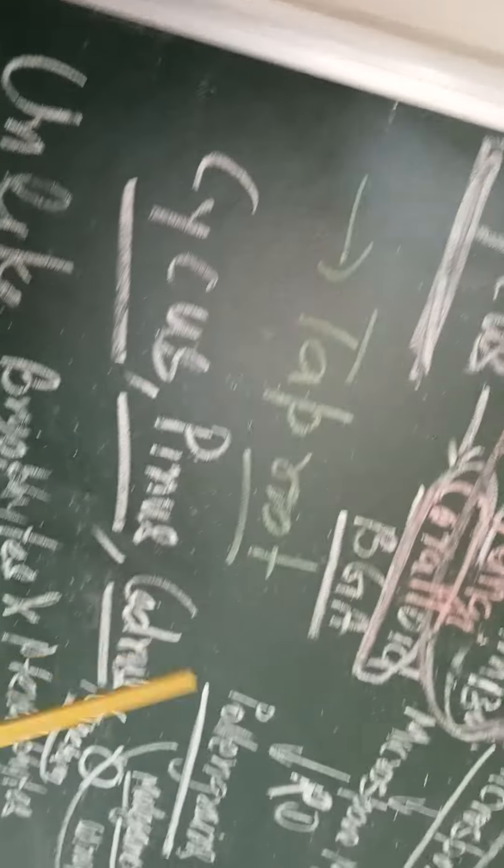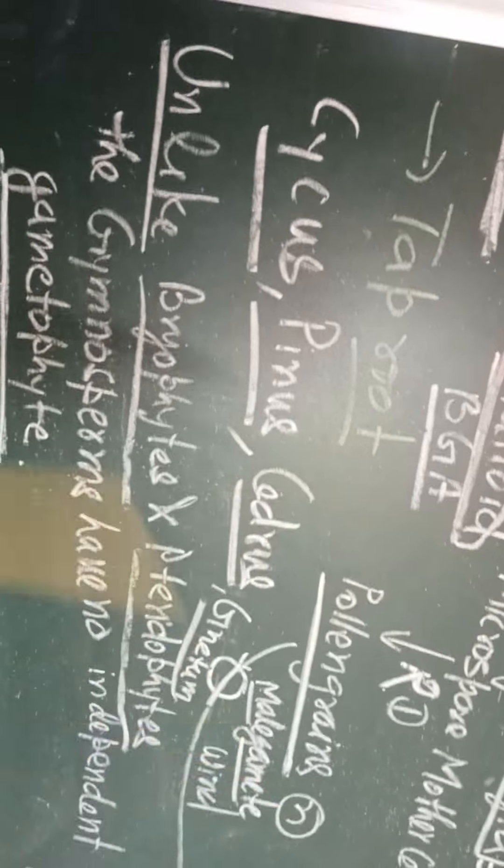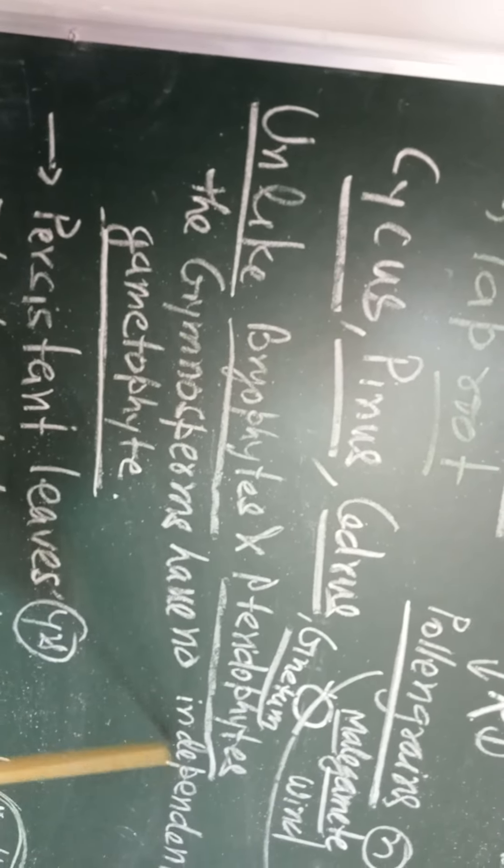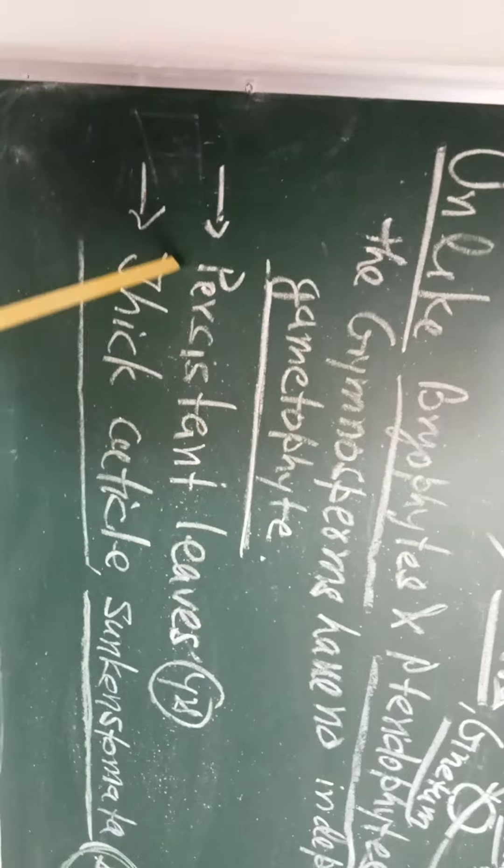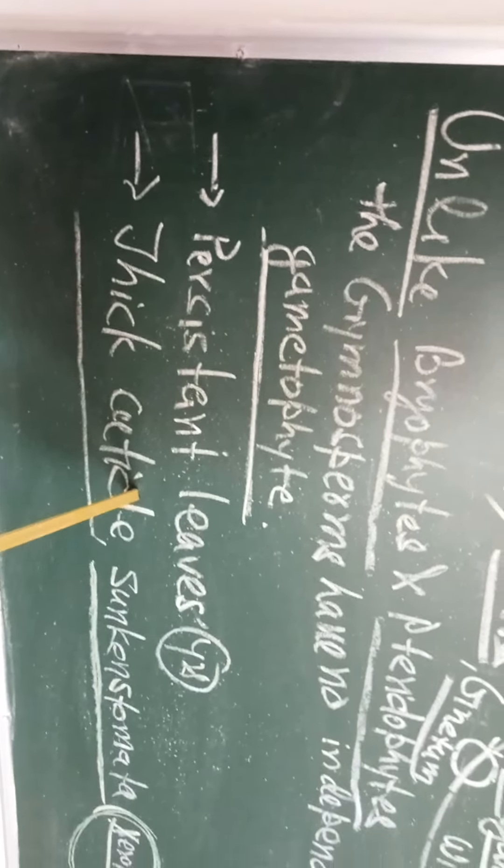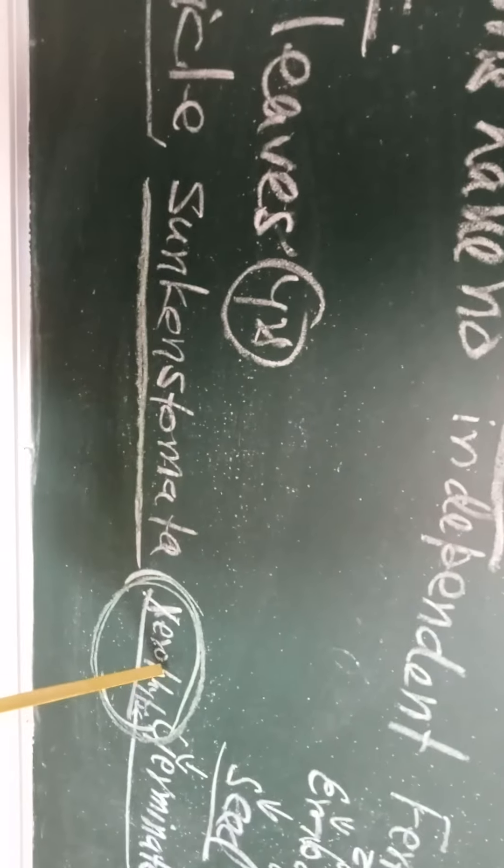They have a taproot system because they are totally freed from water. All adaptations take place to make them adapted to live on terrestrial habitat or xerophytic conditions, meaning where there is a scarcity of water. Cycas, Pinus, Cedrus, Gnetum are the examples you must remember. Unlike bryophyte and pteridophyte, the gymnosperms have no independent gametophyte. They have persistent leaves. The leaves remain retained for many years. They have thick cuticle and sunken stomata, which help them to extend even in a stressful condition when there is a scarcity of water. These all are xerophytic conditions - they survive even in scarcity of water.